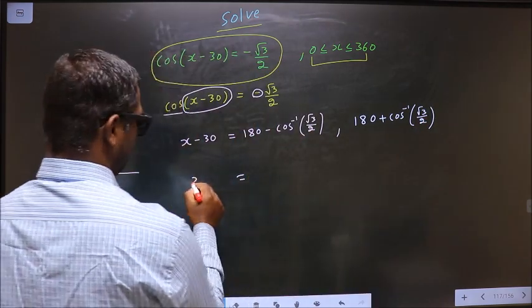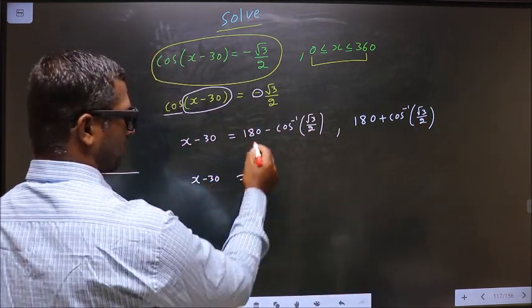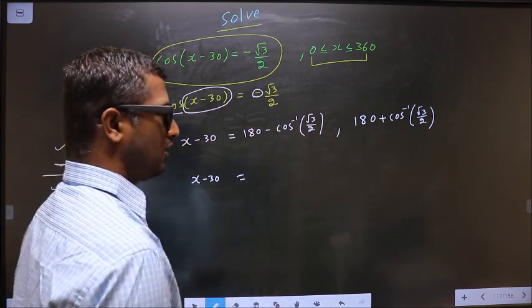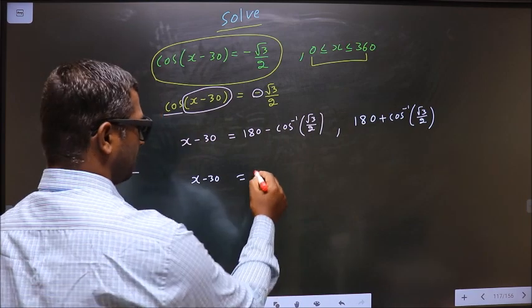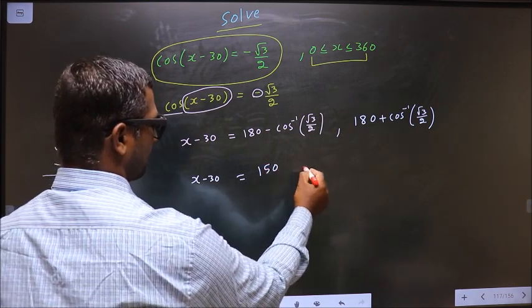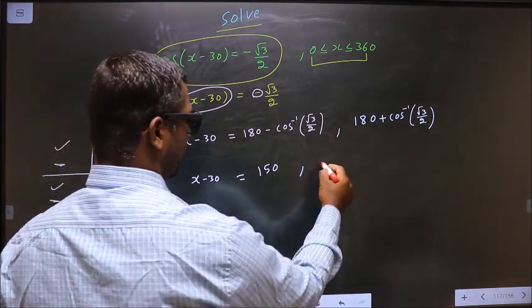Now x - 30 equals... Calculate this you should get 150. Calculate this you should get 210.